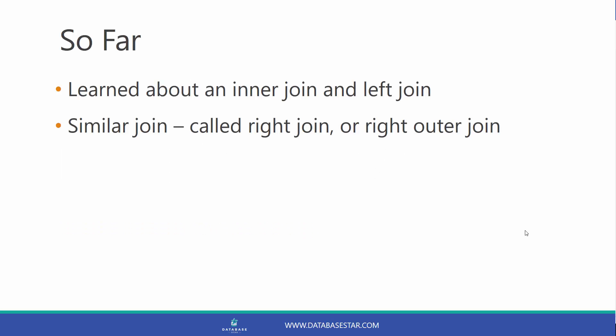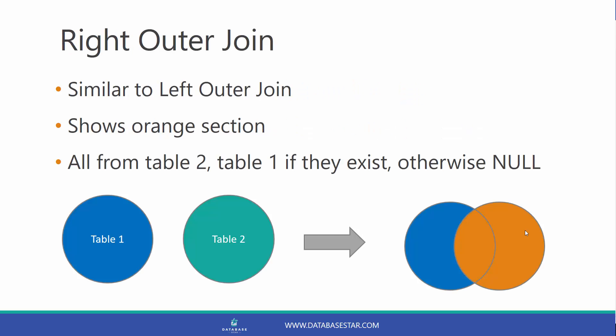Right outer join. So far, we have learned about an inner join and a left outer join. There's a join similar to the left outer join, and it's called the right outer join. A left outer join shows all records on the left table. The right outer join shows all records on the right table, and a null for the record in the left table if it does not exist. It's the opposite of a left outer join. And in the diagram here, it shows all records in the orange section.